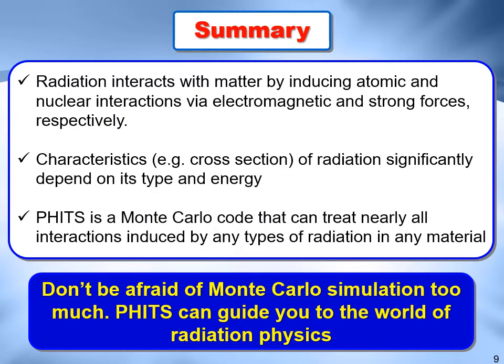Here is the summary of this lecture. Radiation interacts with matter by inducing atomic and nuclear interactions via electromagnetic and strong forces, respectively. Characteristics of radiation, such as cross-section, significantly depend on its type and energy. FITS is a Monte Carlo code that can treat nearly all interactions induced by any type of radiation in any material. It is better to roughly understand radiation physics before starting to learn FITS, but not necessary to fully understand it, because you will gradually understand it by using FITS. Don't be afraid of Monte Carlo simulation — FITS can guide you to the world of radiation physics. Thank you for watching this movie, and we hope you will watch other FITS movies.